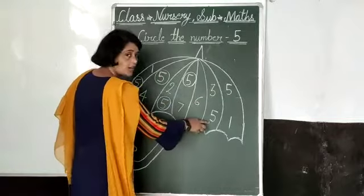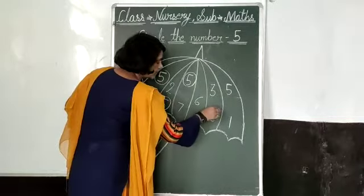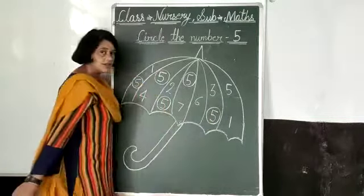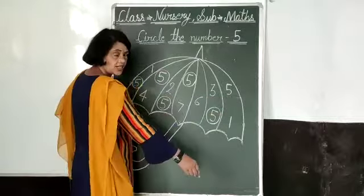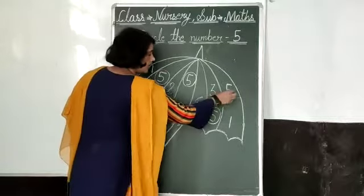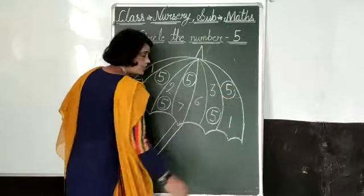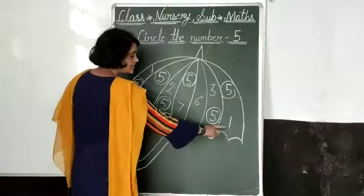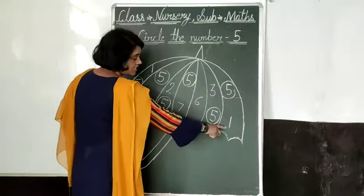This number 5 — yes, now circle this number. This number 5 — yes, now circle this number. This number 1 — not circle this number.